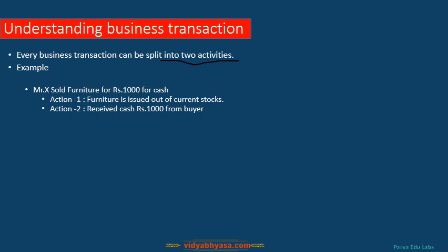Activity 1 is called the receiving benefit activity and the second one is the giving benefit activity. For example, Mr. X sold furniture for rupees 1,000 for cash. There are two activities here: furniture is issued out of the current stock, which is a giving activity, and Mr. X received cash of rupees 1,000, which is a receiving benefit.